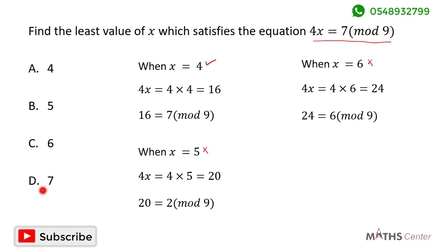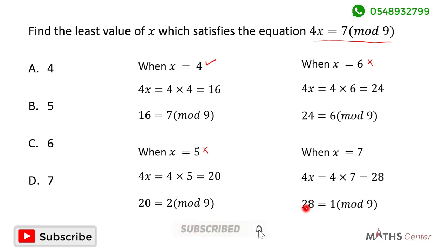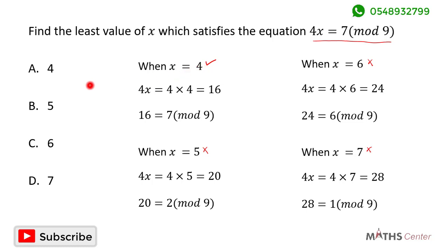The last option is when x is equal to 7. When x is equal to 7, 4x will be equal to 4 times 7, which gives us 28. The value of 28 in mod 9 is 1. So when x is equal to 7, the equation will not be satisfied. As you can clearly see, the equation is only satisfied when x is equal to 4, so the correct option is A.